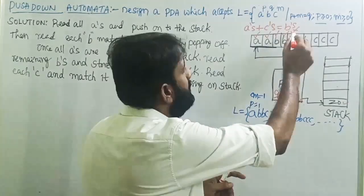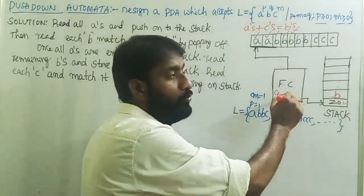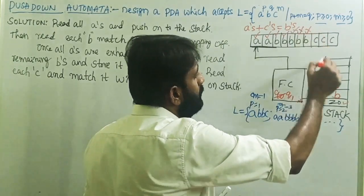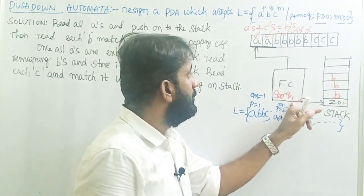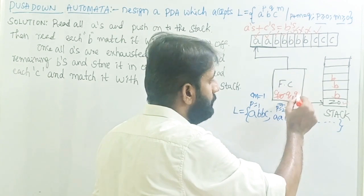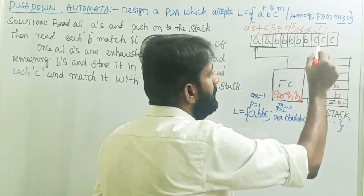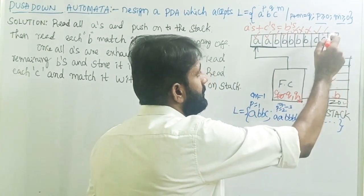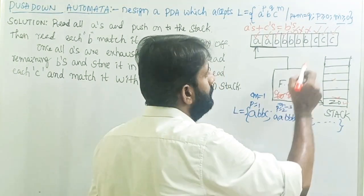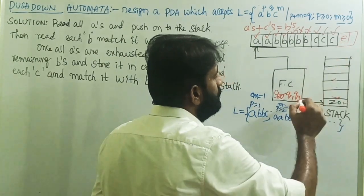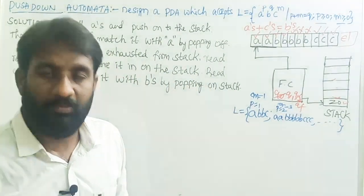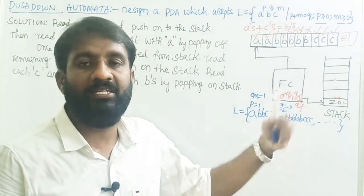On state Q1, the next input symbol is B and the top of the stack is Z-naught, meaning all A's are exhausted. So now push remaining B's onto the stack. On Q1, read remaining B's and push them onto the stack. Then on state Q1, input symbol is C and top of stack is B, so change state from Q1 to Q2 by doing the pop operation. On Q2, input symbol is Epsilon and top of stack is Z-naught, so simply move to the final state — the string is accepted by final state.